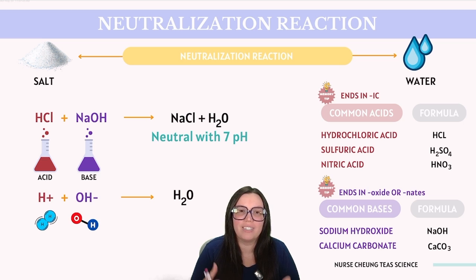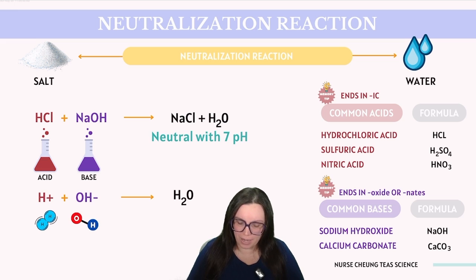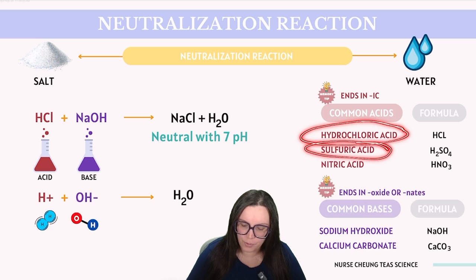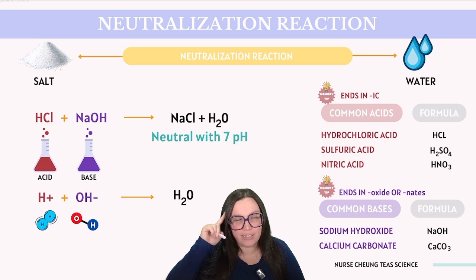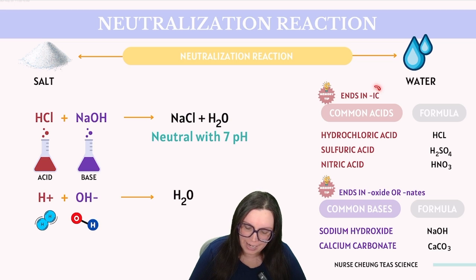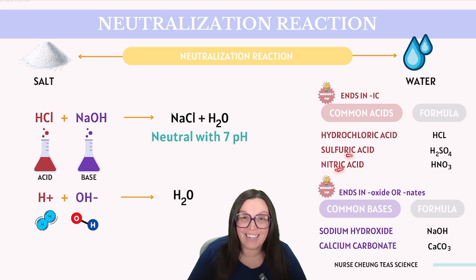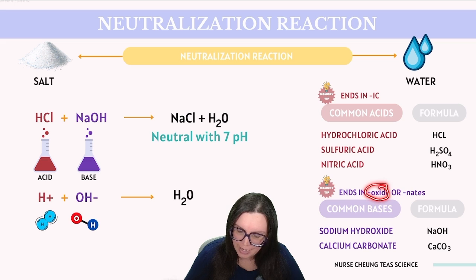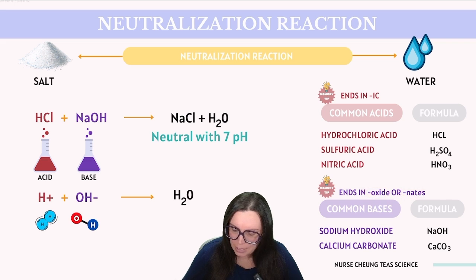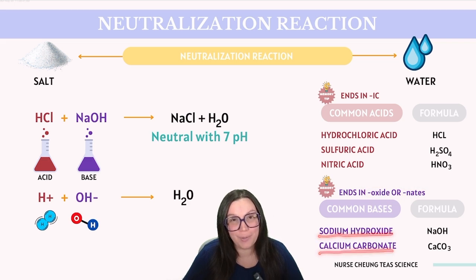Before we move on to practice questions, let's review some common acids and bases you might encounter on the TEAS. Prominent acids include hydrochloric acid, sulfuric acid, and nitric acid. A key memory trick is that many acids end in '-ic,' like hydrochloric, sulfuric, and nitric. On the base side, you'll frequently come across hydroxides and carbonates, which end in '-oxide' or '-ates,' like sodium hydroxide and calcium carbonate.